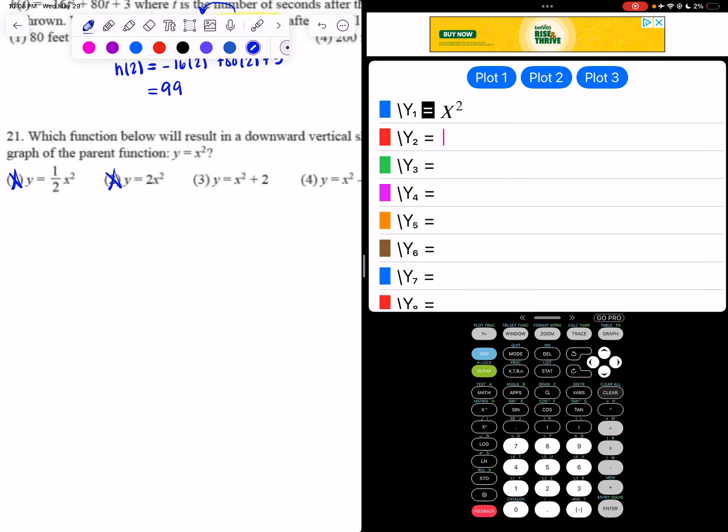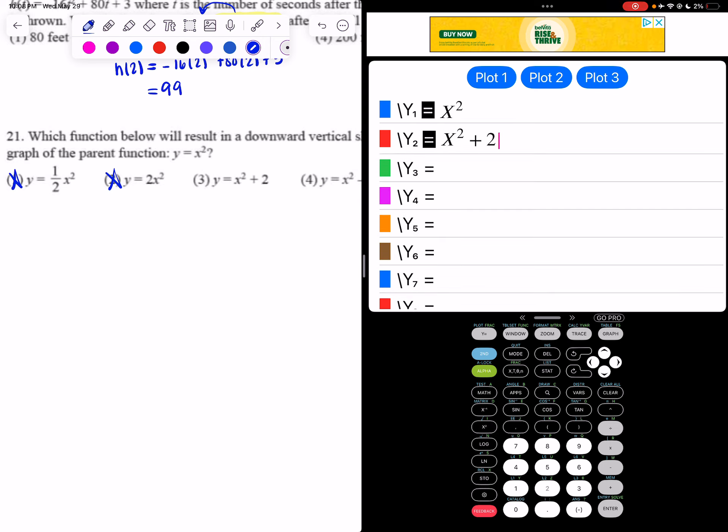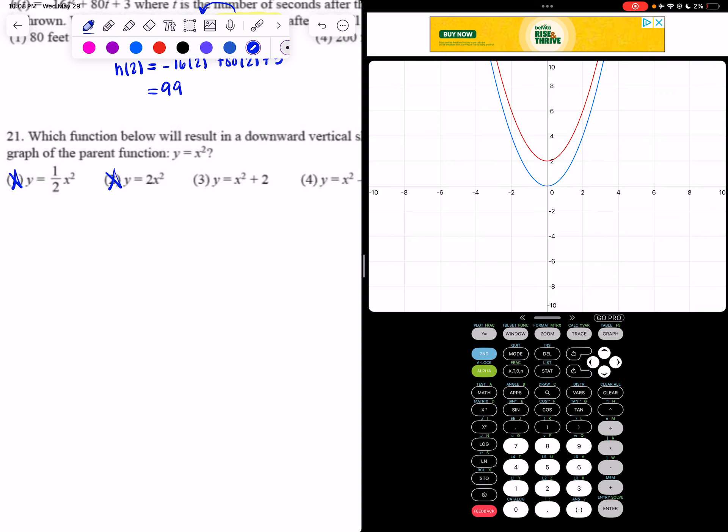Now, I'm going to type in x squared plus 2. And if you look, now the graph's been moved up.